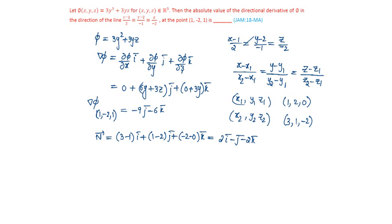So our directional derivative in the direction of n bar will be del phi dot n bar divided by magnitude of n bar. That equals (0 + 9 + 12) divided by the square root of (4 + 1 + 4), which equals 21 by root 9, which is 7. So the answer is 7.